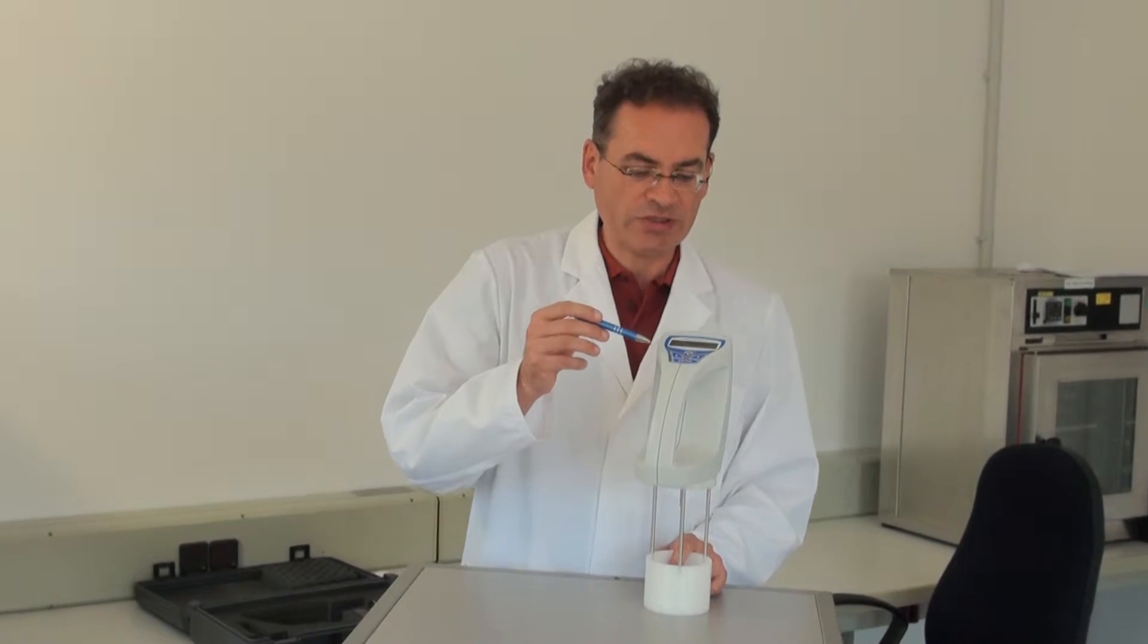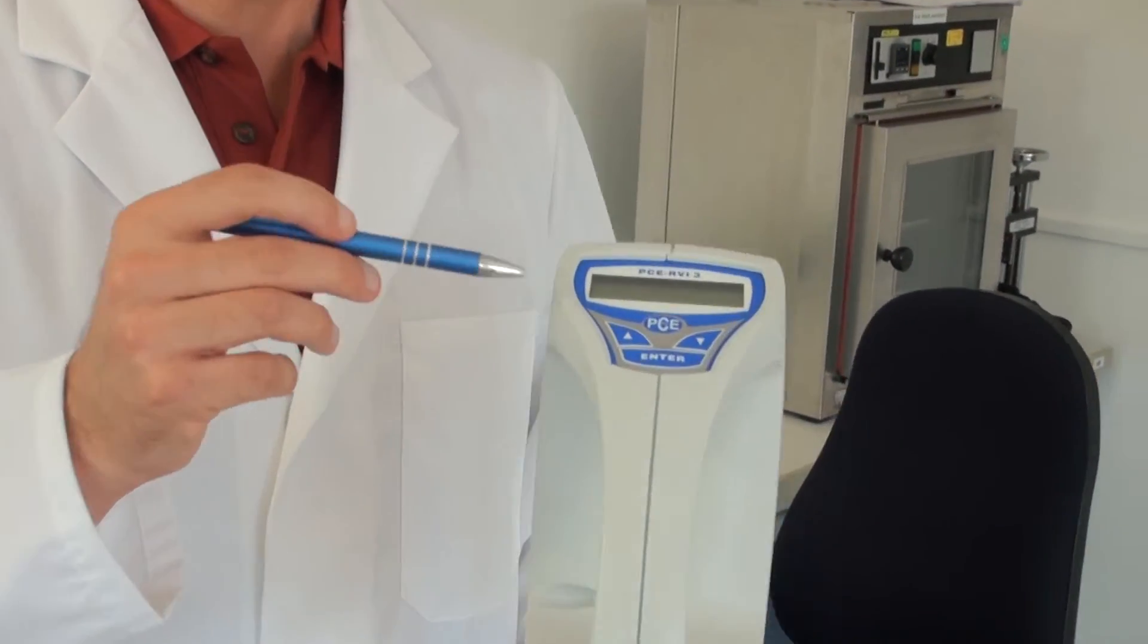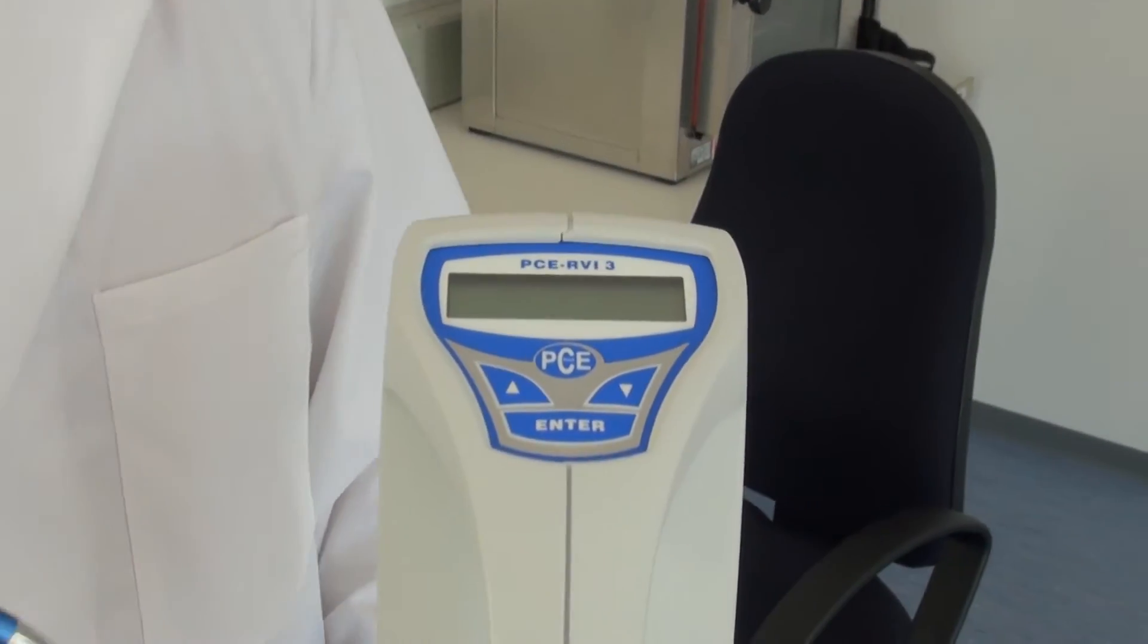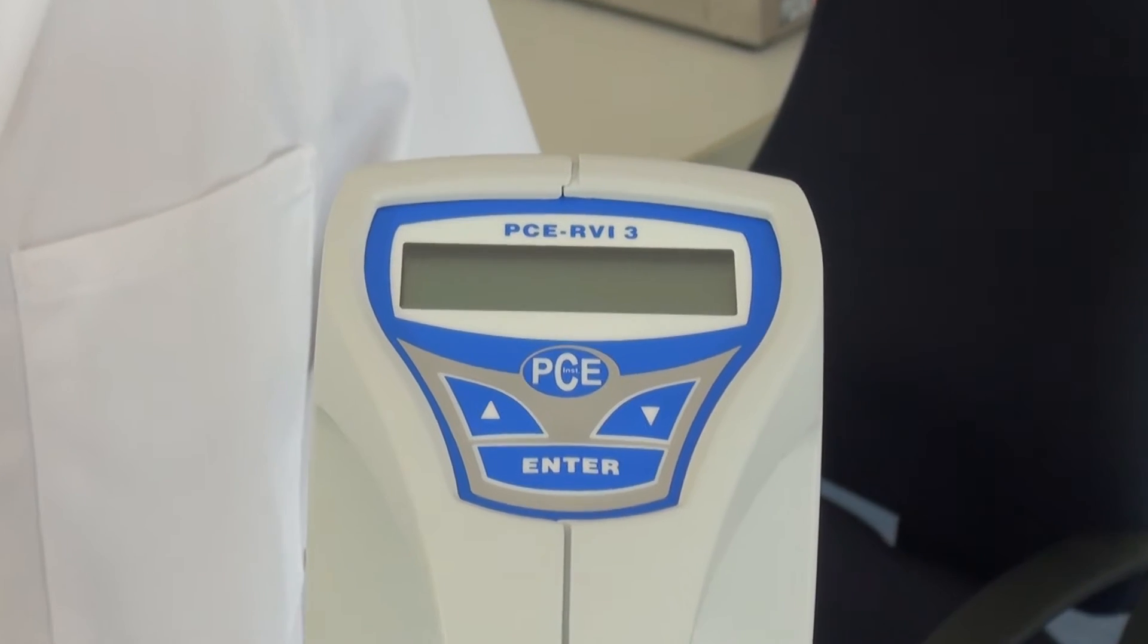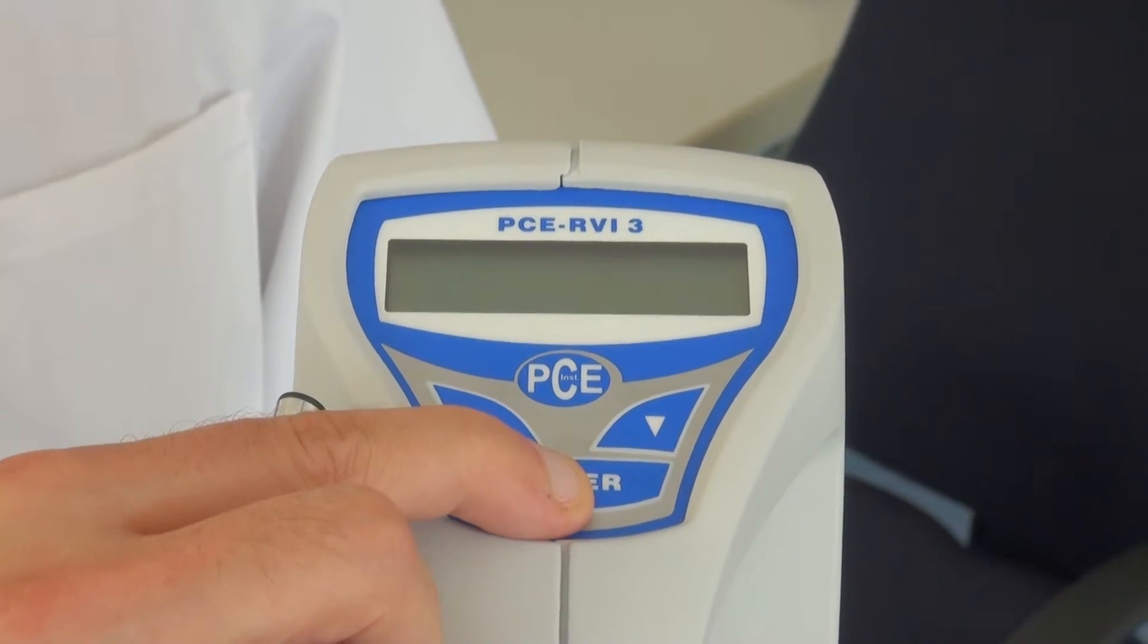The measuring device has on the top an operating panel and a display to show the measured value. The operating panel consists of only three keys and it is easy to use. To turn the device on, the enter key is held for about 10 seconds.